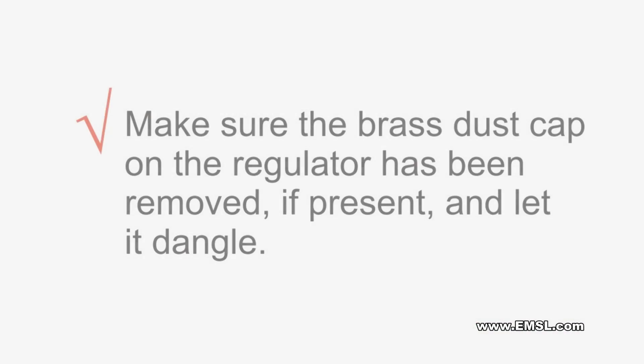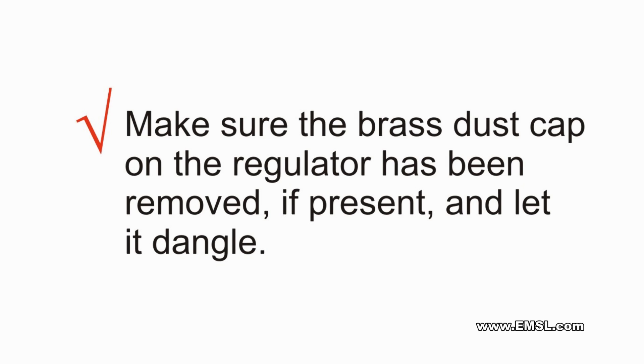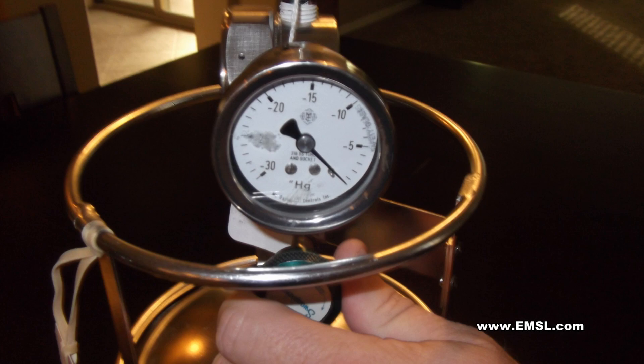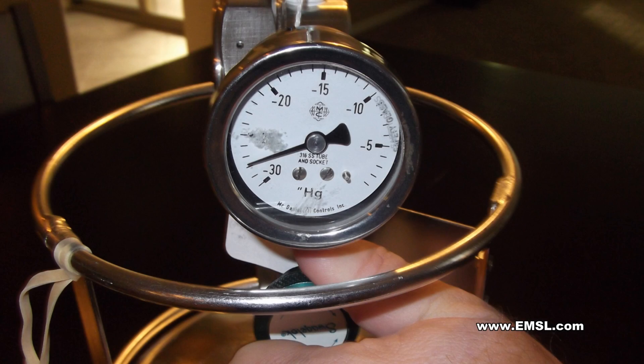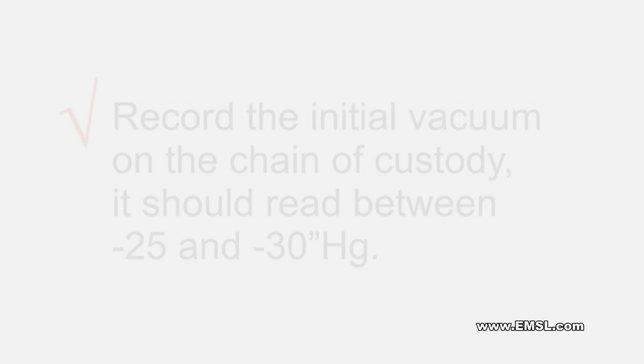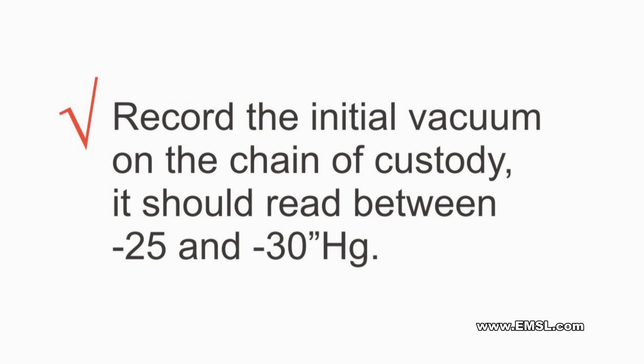Make sure the brass dust cap on the regulator has been removed, if present, and let it dangle. Open the valve by turning it counter-clockwise until completely open. Sampling will now begin. Record the initial vacuum on the chain of custody. It should read between -25 and -30 inches of mercury.